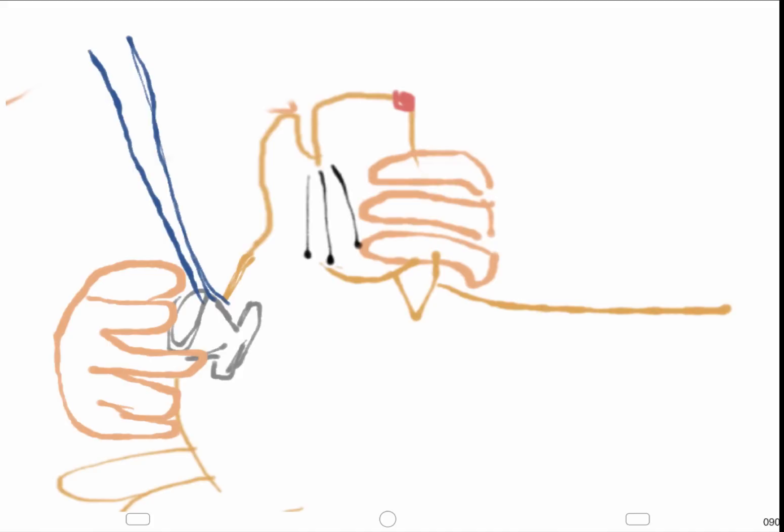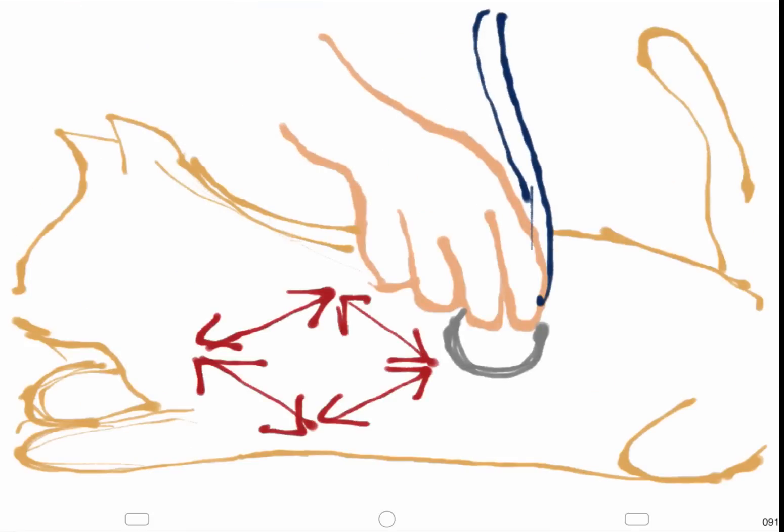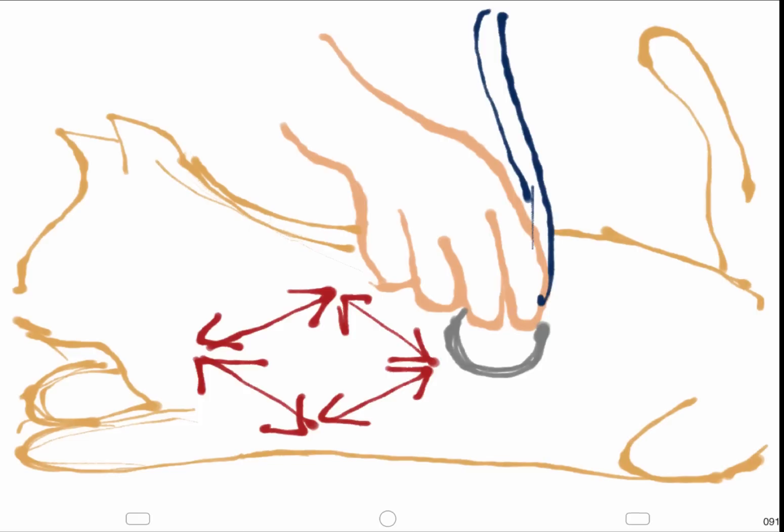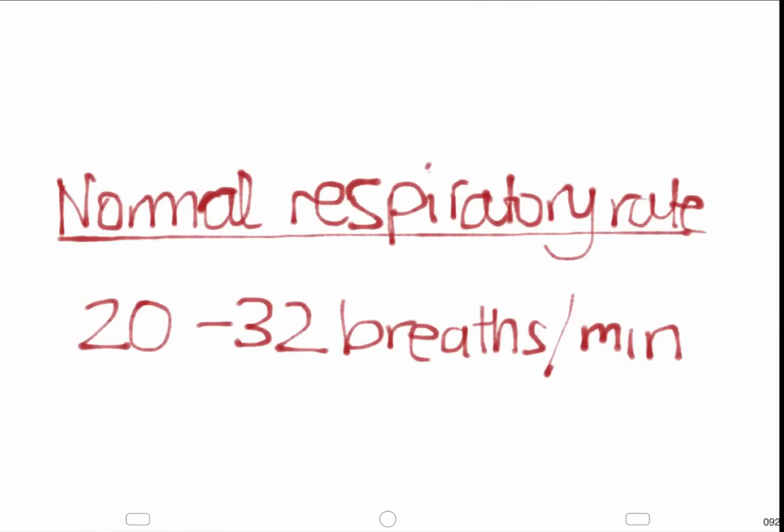Auscultation of the respiratory system begins at the region of the larynx, throat, and trachea. The cat should also be auscultated for lung sounds cranially, caudally, ventrally, and dorsally along the thoracic cavity. The normal respiratory rate for the cat is 20 to 32 breaths per minute.